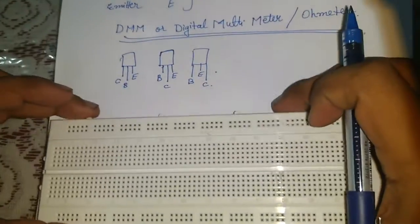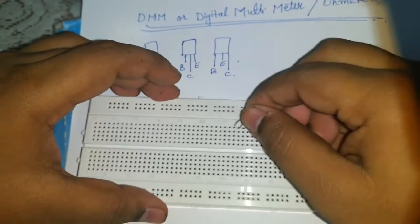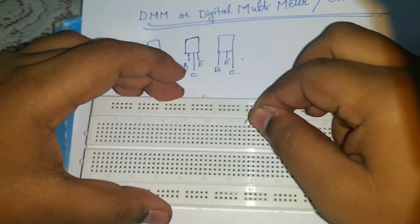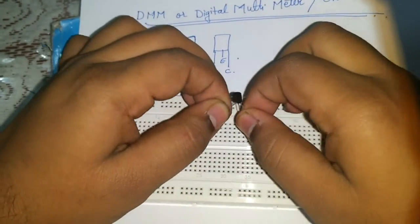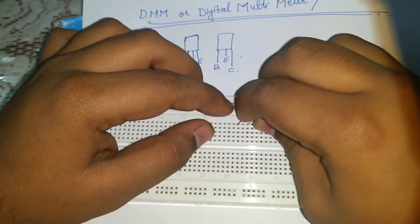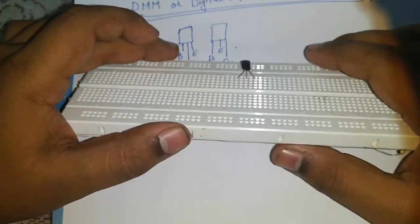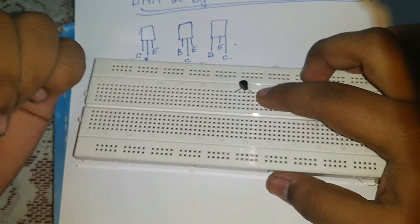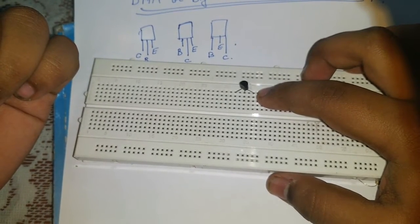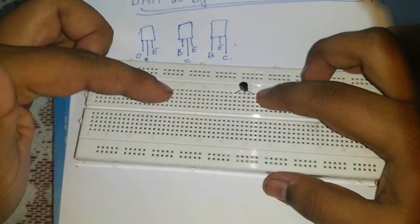Let's take a breadboard and mount a transistor. I have taken a BC548 and I will mount it in the breadboard like this.